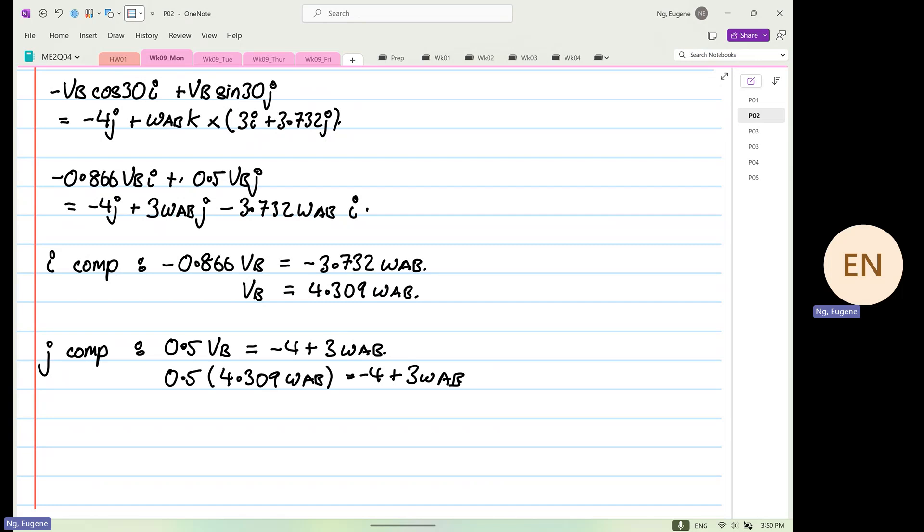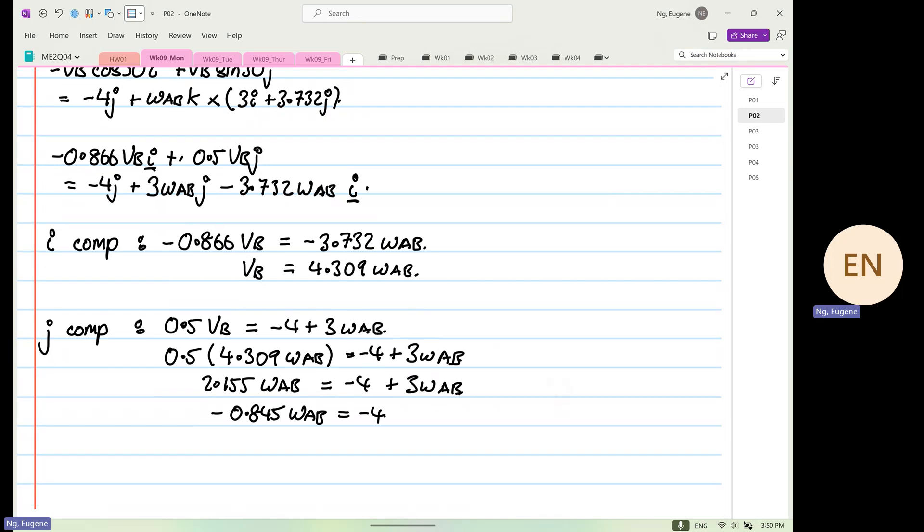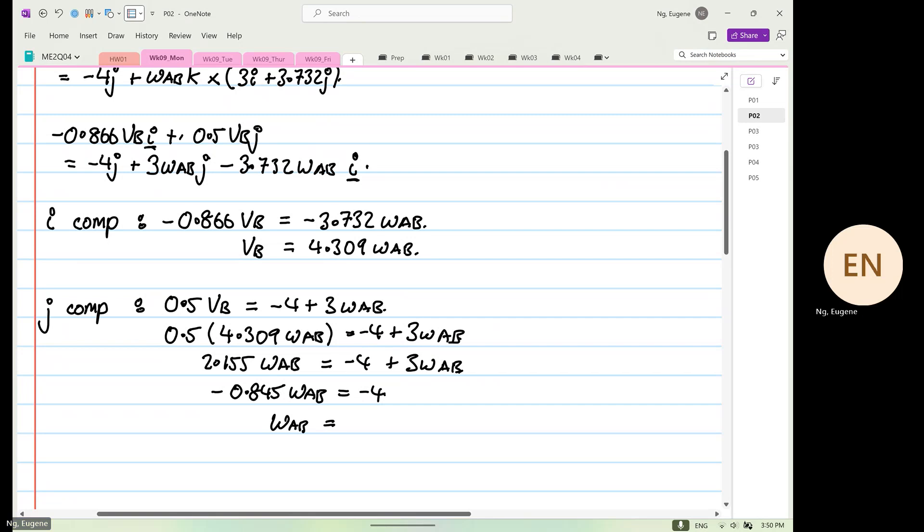So 0.5 times 4.309, yes, so 0.5 times 4.309 gives 2.155 Omega AB. And this is equal to minus 4 plus by 3 Omega AB. So 2.155 minus 3 is minus 0.845 Omega AB, and this is equal to minus 4. So Omega AB is equal to 4 divided by 0.845 is equal to 4.733, 4.734 sorry, radians per second.